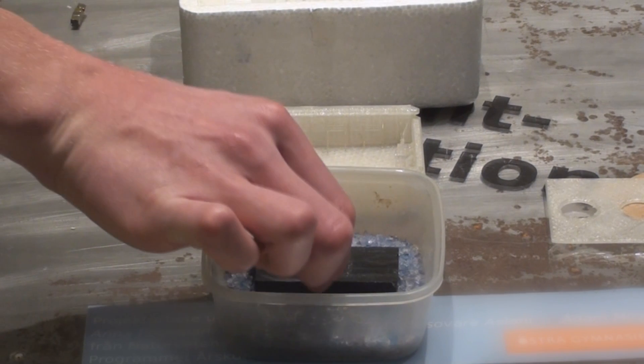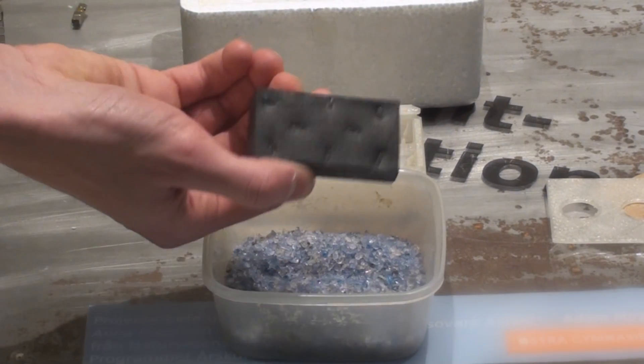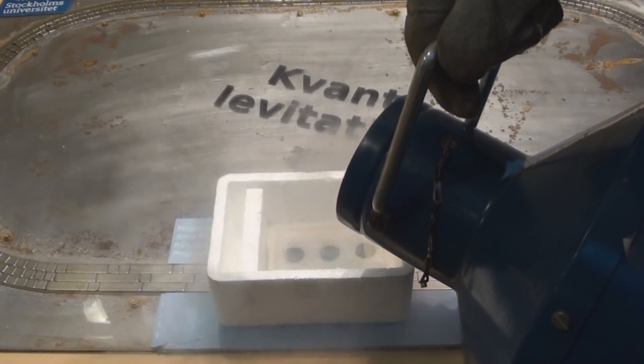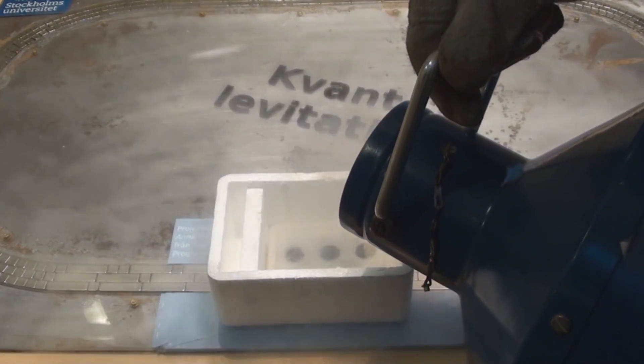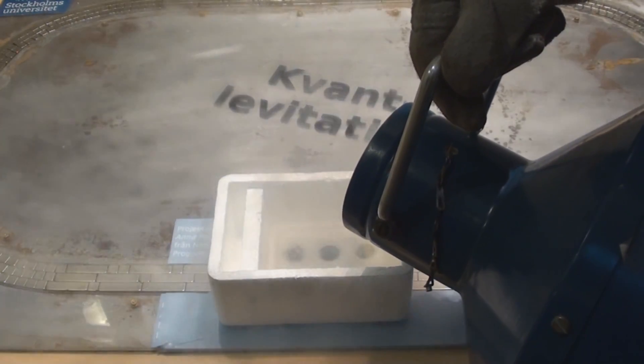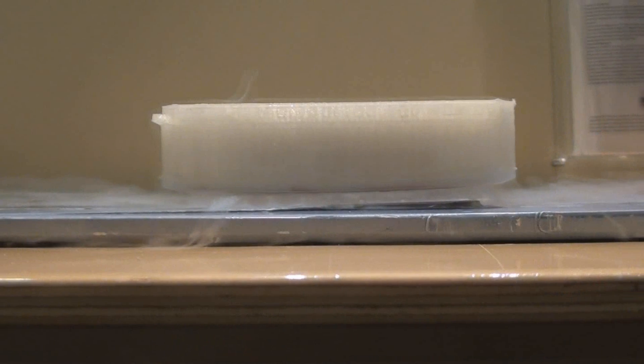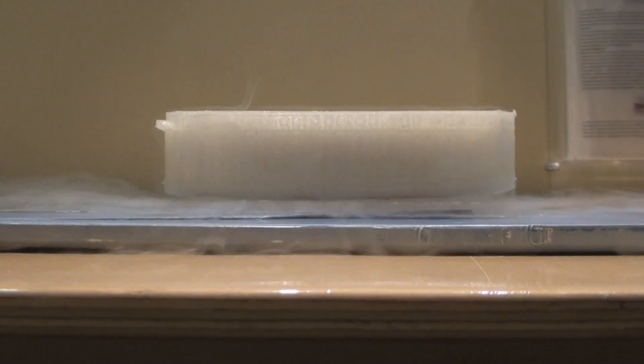But this material YBCO is very special because if you have it in a magnetic field as you cool it down to its superconducting state it allows some of the field lines to go through it. These will then be what the superconductor is used to and therefore will be keen on staying at the same altitude above the magnet track in accordance with Lenz's law.